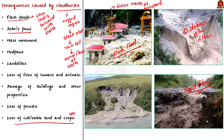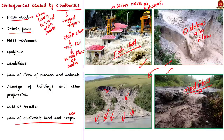All of this results in land caving. Flash floods, debris flow, and mud flow transport large amounts of debris and mud from the top of the hill to the bottom, causing the land to start caving in. These are the major consequences of cloudburst.